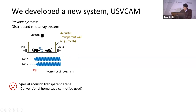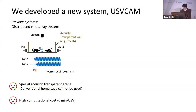A conventional home cage is a good environment to observe social behavior such as parental behavior and sexual behavior. Also, computation time in the previous system took around 6 minutes per USV.